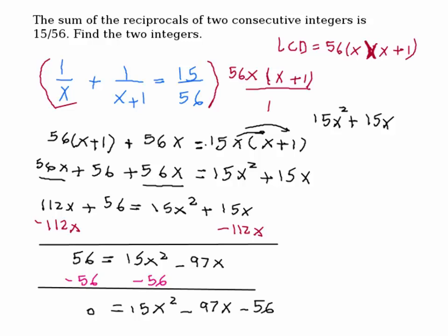Is this factorable? If I open two parentheses — for 15x squared, if I use 15x and x, what combination gives you 56? Somebody put 7 and 8. So if I put 8 here and 7 here, using 15x and x, with negative 7 and positive 8, I get negative 97x out of that. So the factored form is (15x + 8)(x − 7) equals 0.